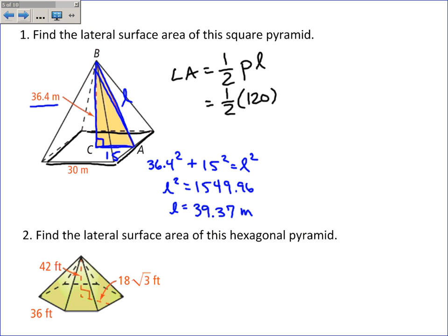So if we're given the height instead of the slant height, we'll need to use the Pythagorean theorem to find the slant height. Then I plug this in, 39.37, and I get the lateral area to be 2362.17 meters squared. Now, we don't do it in this problem, but if we were to define the surface area, we then add on the area of the base.